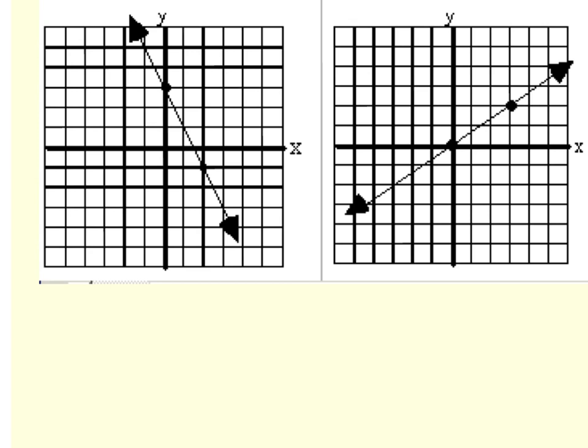You can remember before you do any calculating that when you look at a graph, and from left to right the line is going down, it will have a negative slope. And from left to right if the line is going up, like our second graph, we will have a positive slope.